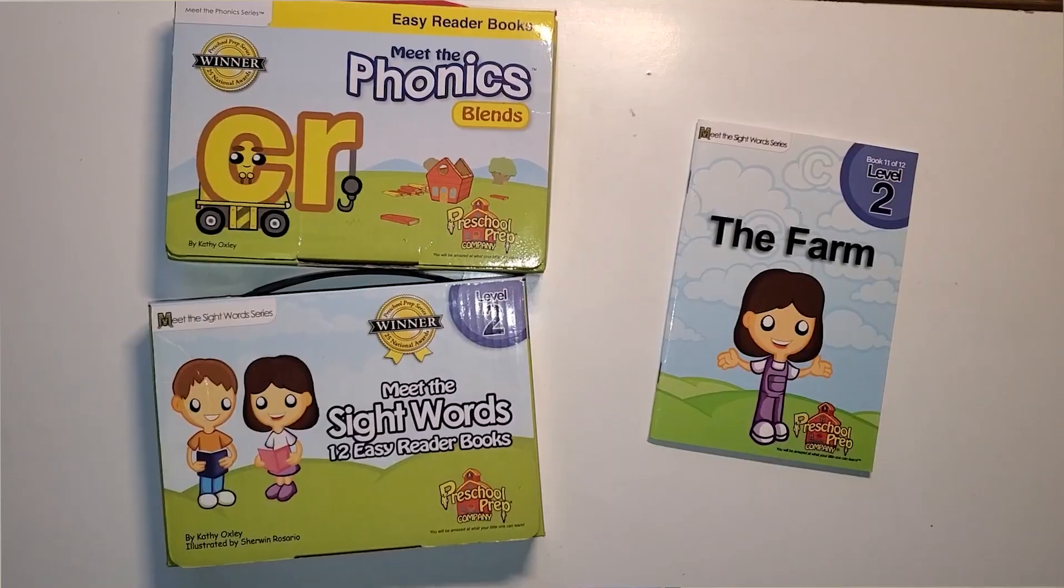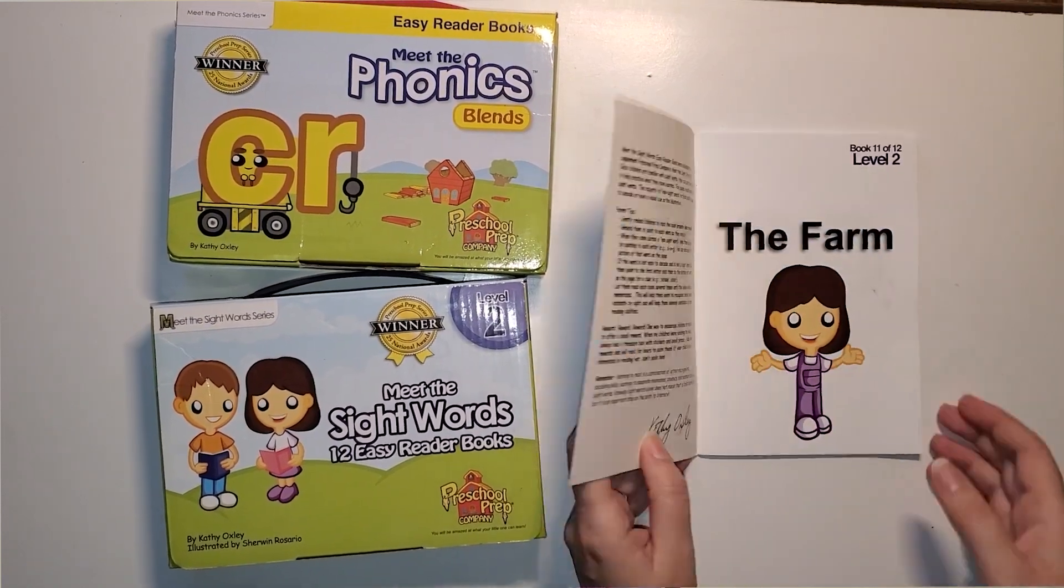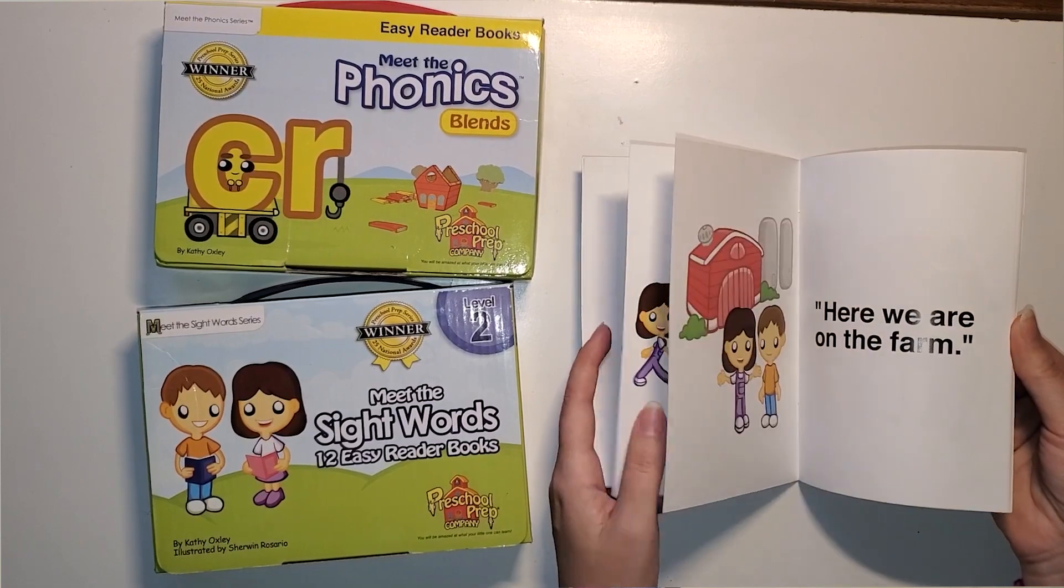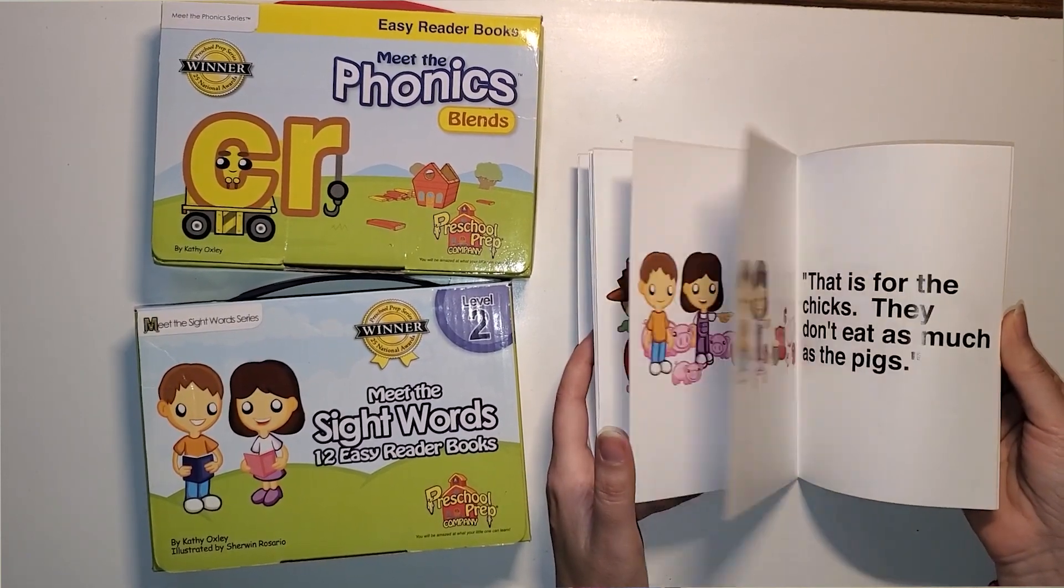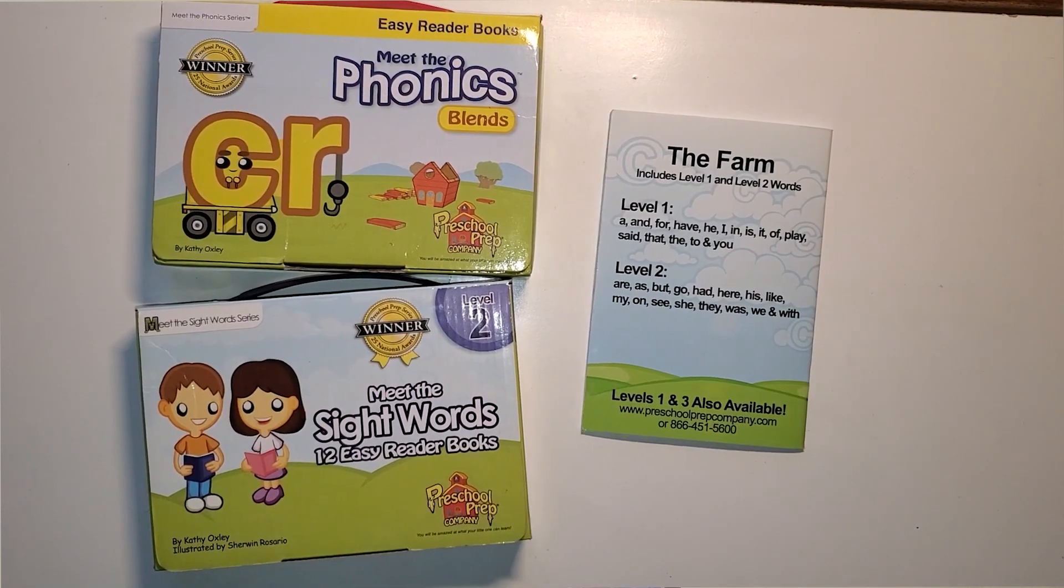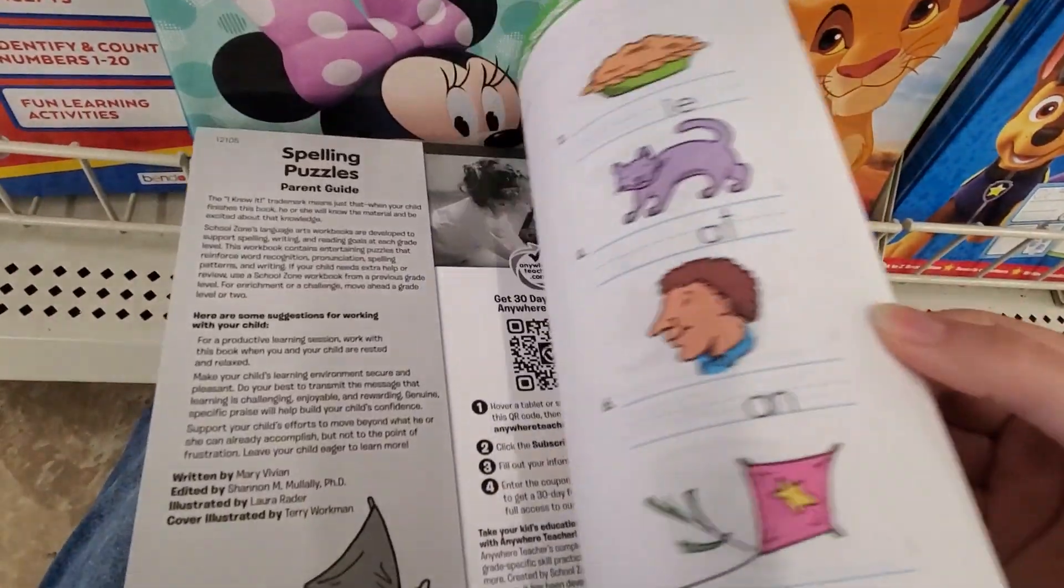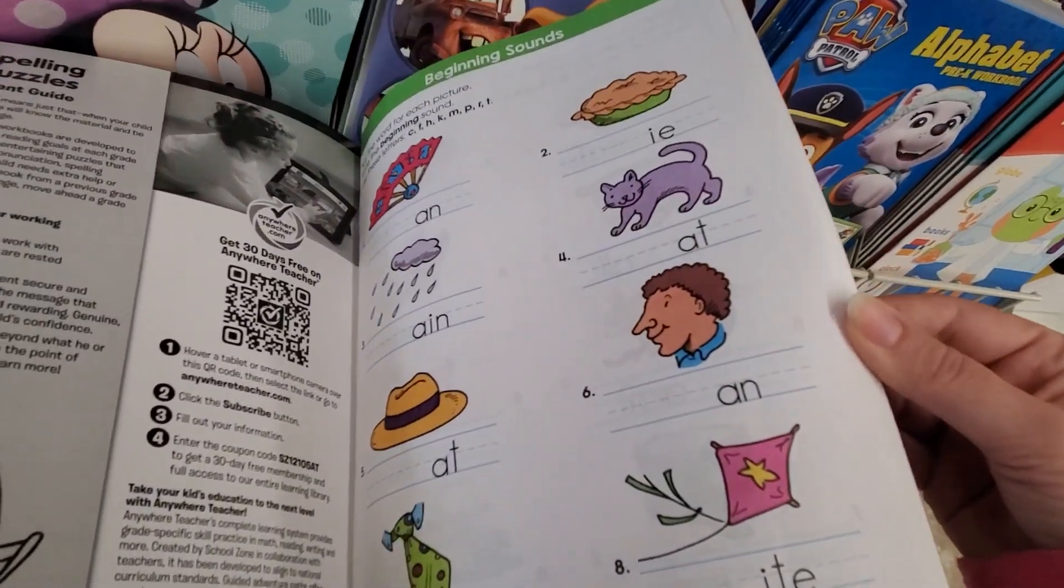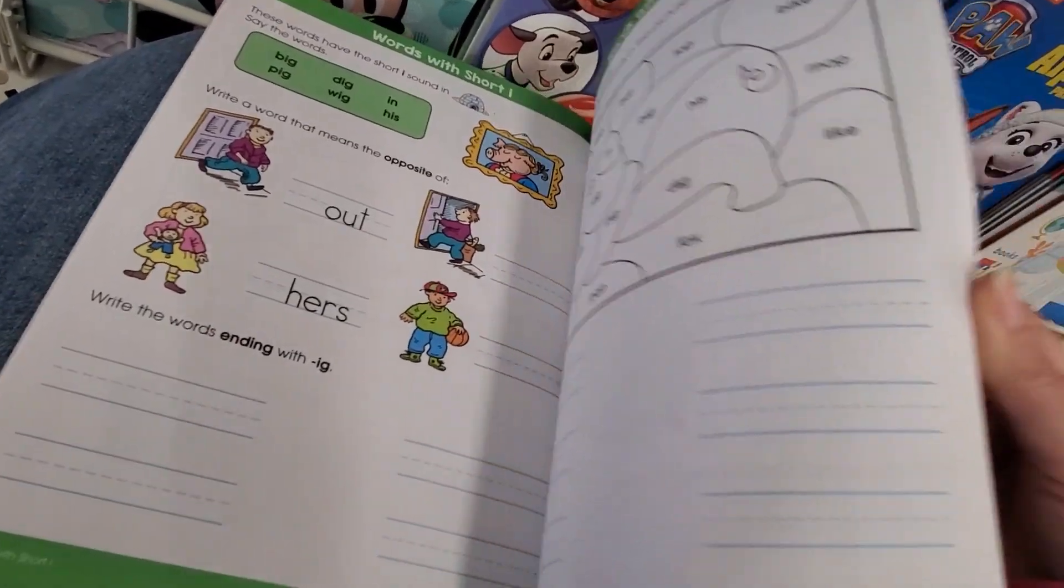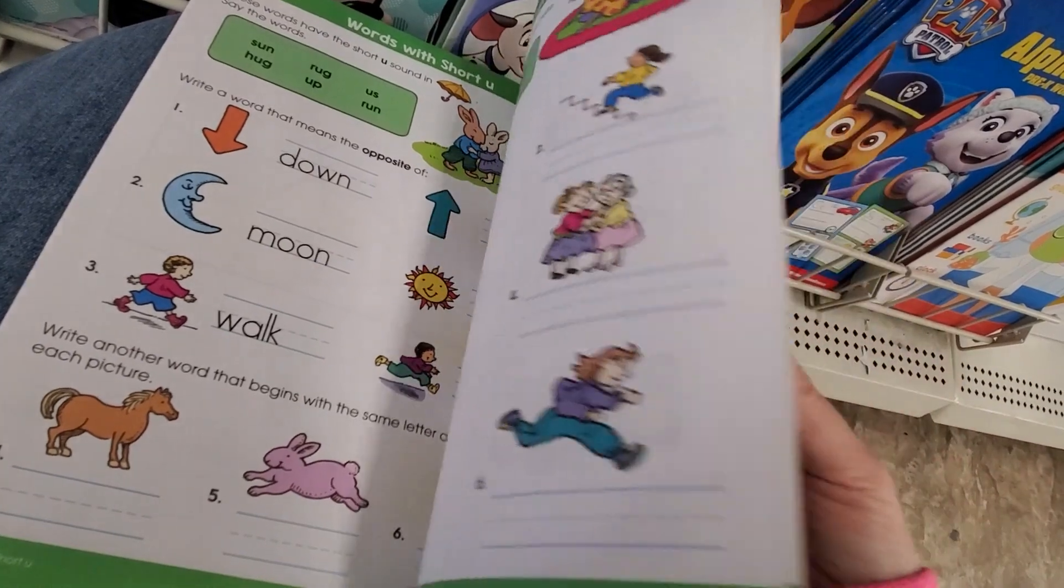Don't forget to add some educational videos from YouTube. Our favorite is preschool prep videos. Both of my kids started reading after watching those videos. Over the years, I've accumulated way more materials than I will ever need. But you definitely don't need that much. Just a few workbooks from thrift stores would definitely do the job to begin.